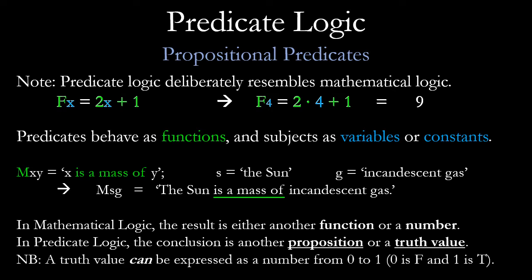A truth value can be expressed as a number: typically false is zero and true is one. When we talk about modal logic or probabilities, the truth value might be somewhere between zero and one — for instance, 0.5 means there's a 50% chance something is true. For our purposes here, when dealing with predicate logic, we're not going to worry about modal or probabilistic logic yet.